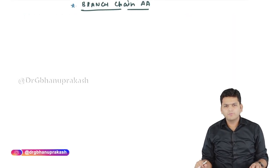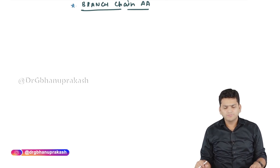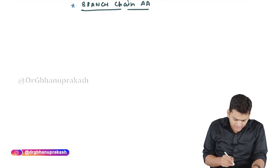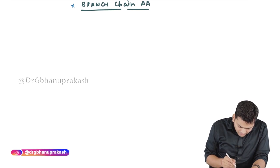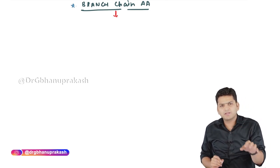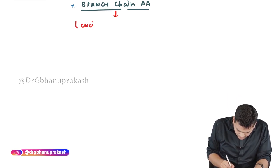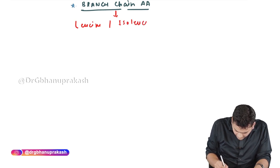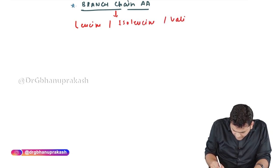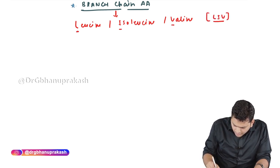Welcome. In this topic we are going to discuss the branched-chain amino acids. We will remember the branched-chain amino acids with the mnemonic: to have a branch relationship, the person has to be 'LIV'-hearted. So the branched-chain amino acids are leucine, isoleucine, and valine — 'LIV' — this is how we remember them.